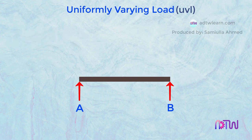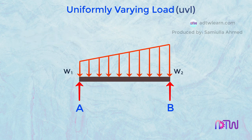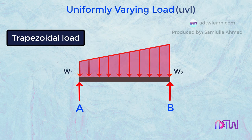Second, the load can vary from W1 to W2. This kind of load is called Trapezoidal Load.